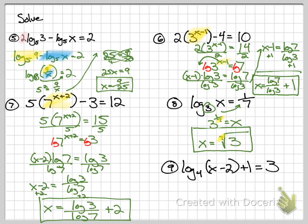Number 9. Get the log alone, minus 1. See if you can finish this one. I'm running out of space, and I think we've done enough of these. Minus the 1, you get 2. 4 squared is 16. Add 2, and you get 18. So that was a lot of different types of log equations that we practiced there.